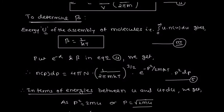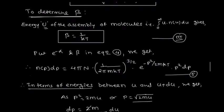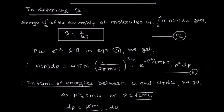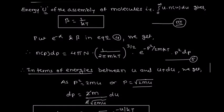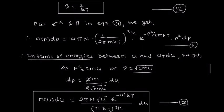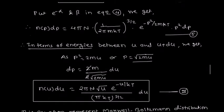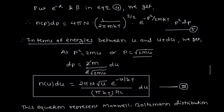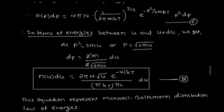Instead of n(p)dp we take n(u)du, making the substitution using the relation between energy and momentum: p²/2m equals u, so p² equals 2mu, and p equals sqrt(2mu). Differentiating p with respect to u gives dp equals m/sqrt(2mu)·du. Substituting into the above equation and simplifying, that relation gives: n(u)du equals 2πN · sqrt(u) · e^(minus u/kT) / (πkT)^(3/2) · du. This equation represents the Maxwell-Boltzmann distribution law in terms of energy.